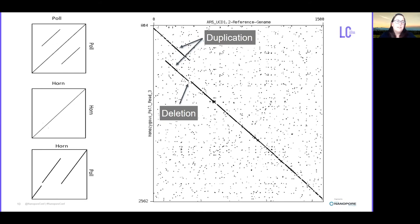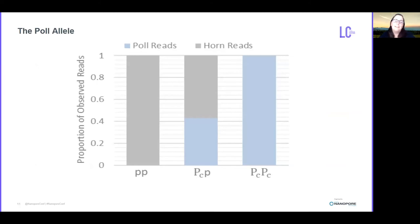And importantly, these reads span the whole region so we don't have to infer anything about whether or not, for example, the deletion and the duplication are in cis or trans. And again, if we look at the proportion of reads in this location we can see that for the two homozygote animals they are only represented by their associated allele, and the heterozygous animals have very close to a 50% proportion of horned and polled reads.